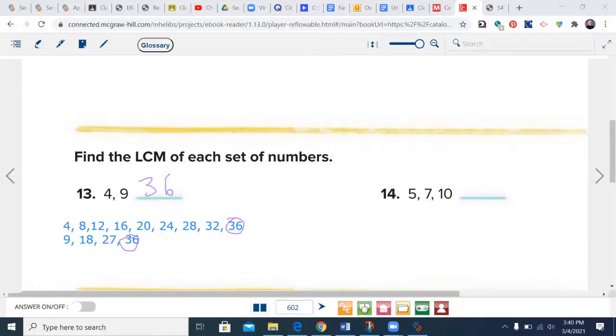Remember, the least common multiple has to be at least as large as your largest number. Go ahead and do 5, 7, and 10 with number 14. Pause the video. On this one, it's going to be 70. Seven times 10 is 70; 5 will go into it, and that's the first one that 7 and 10 will both go into.